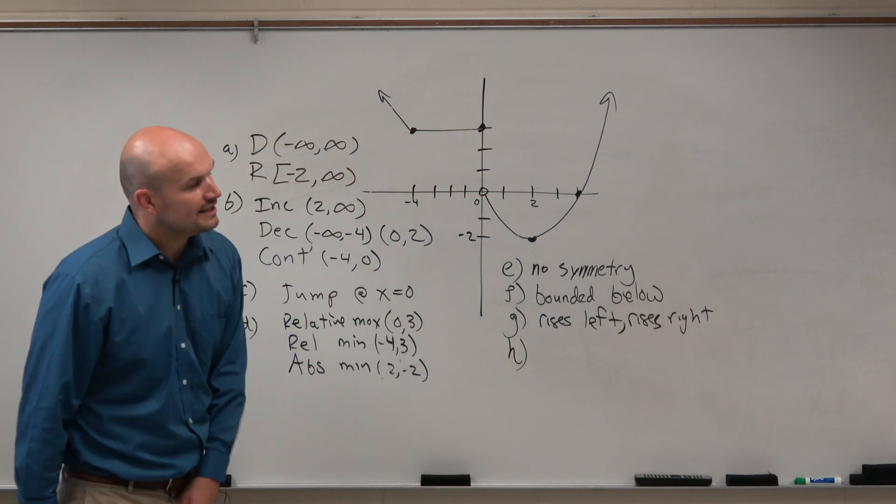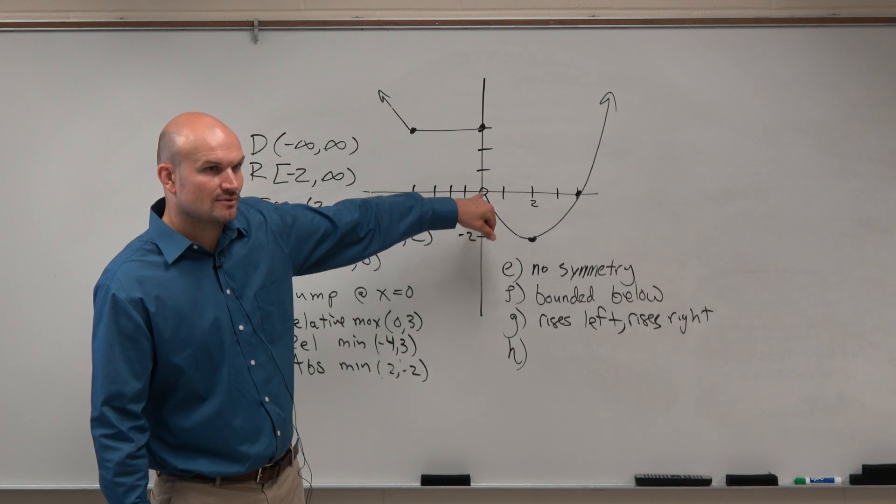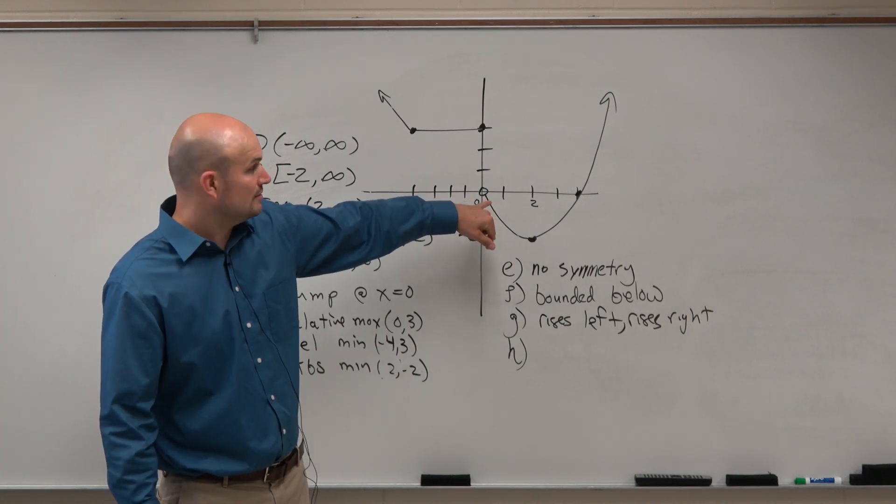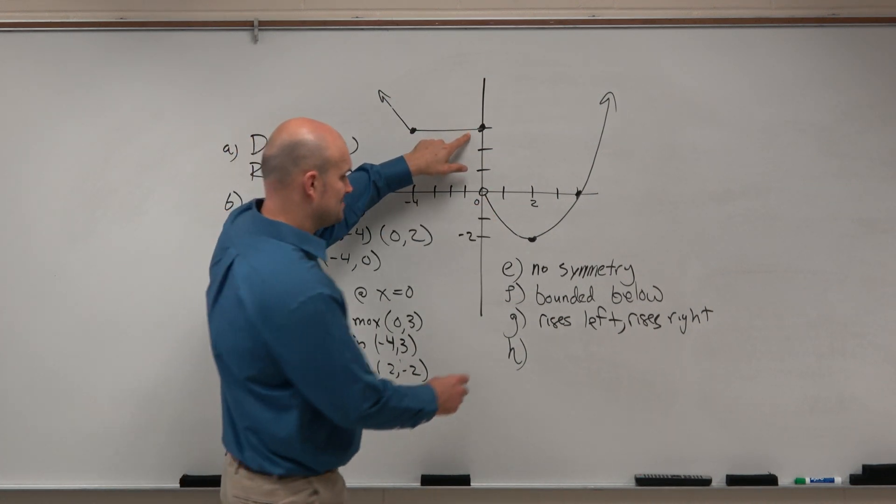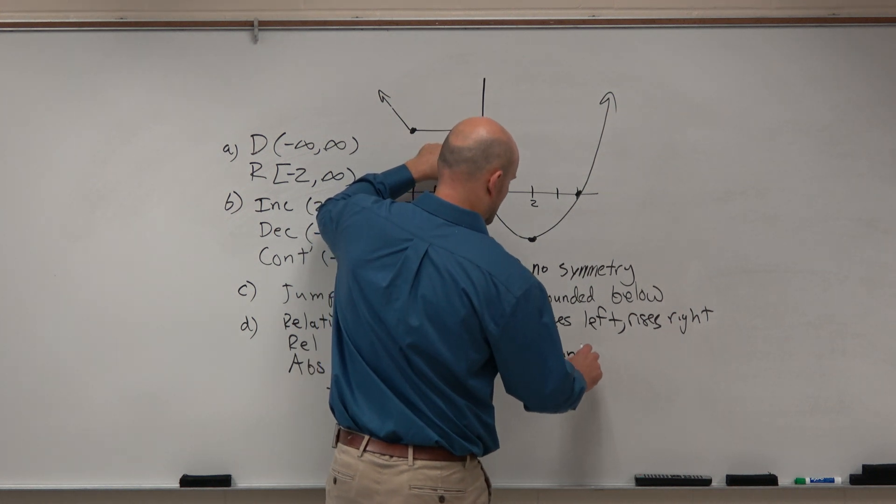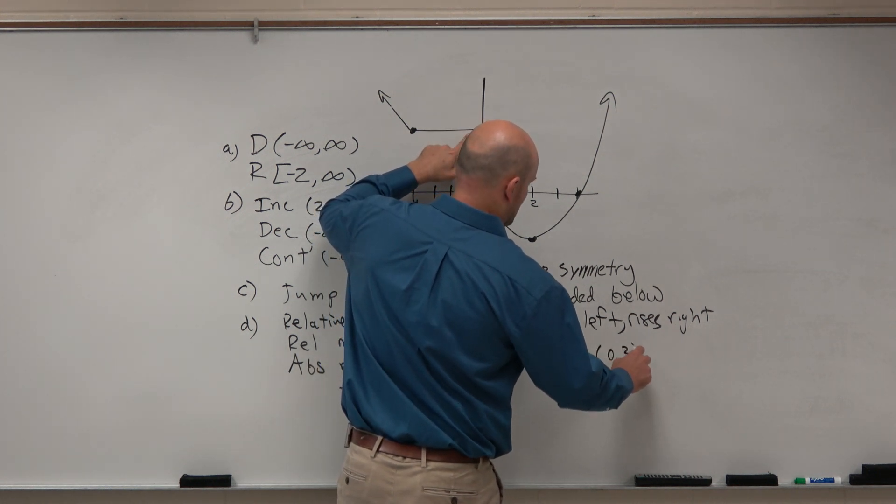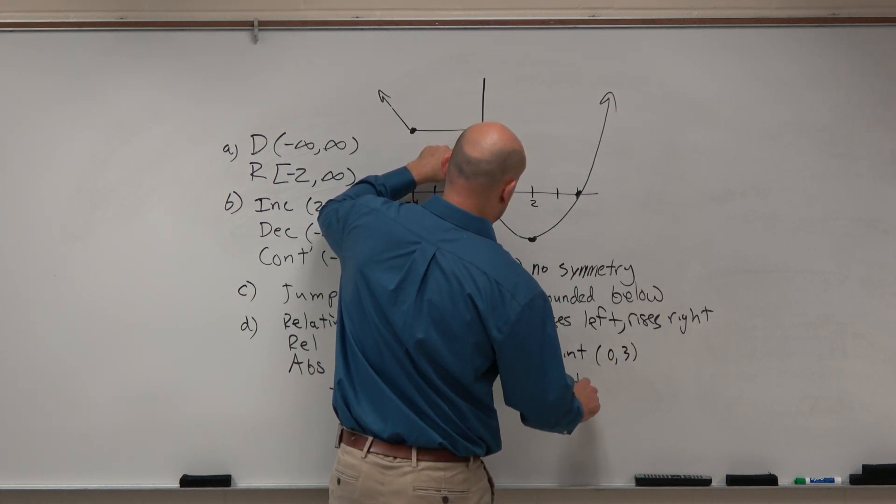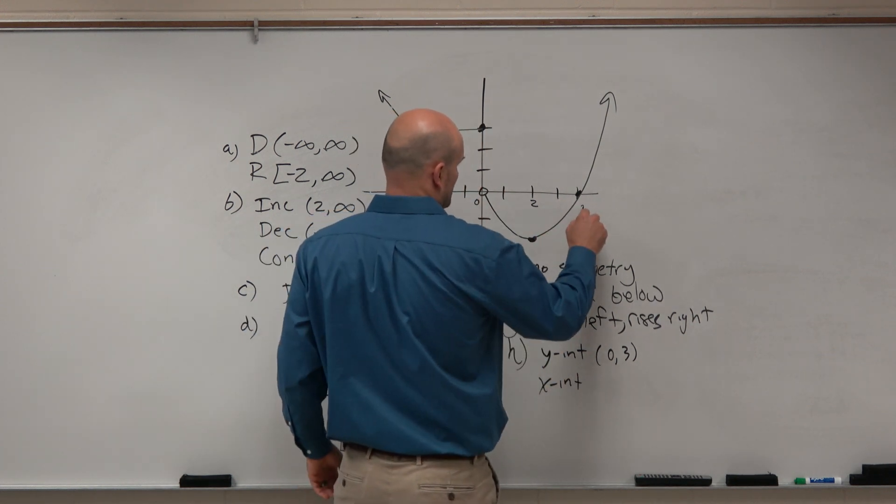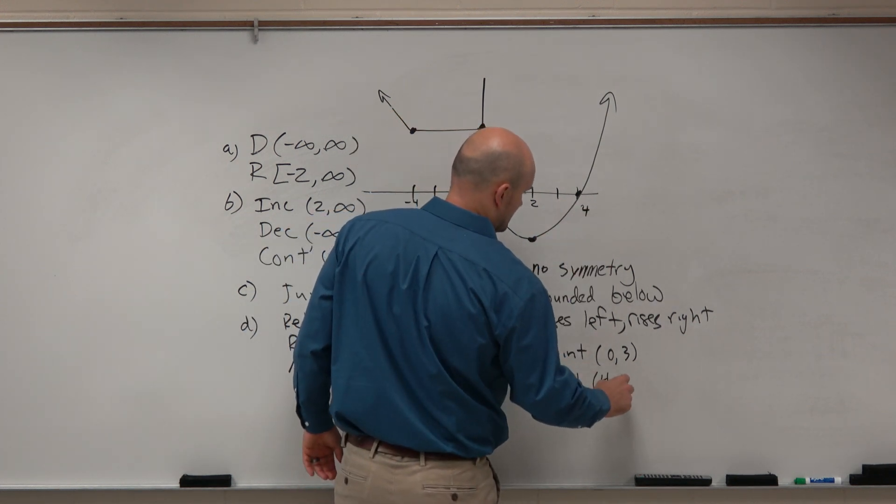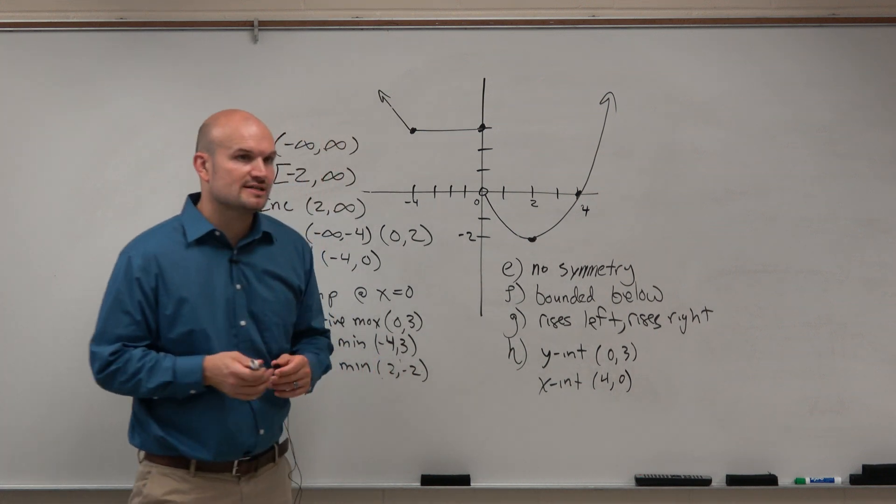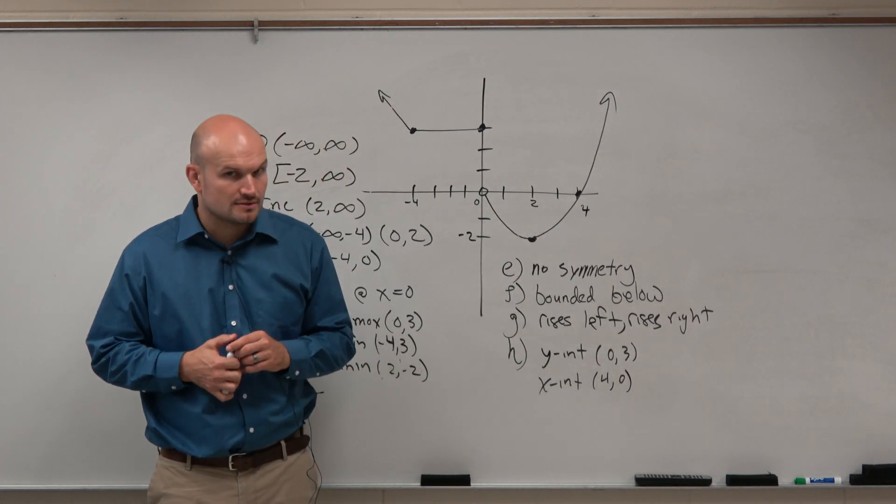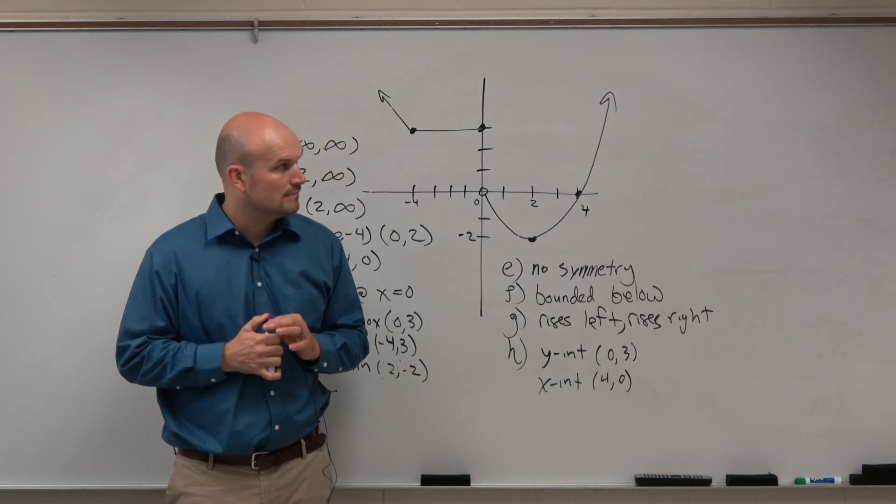And the last thing is the intercepts. Again, guys, do not treat this as an x and a y intercept. It's not. It's an open circle. There's one y intercept at 0, 3. And there's one x intercept at 4, 0. And again, notice which coordinates are 0 and which ones are not, right? OK.